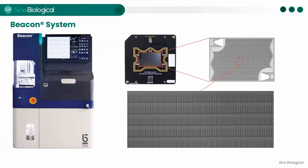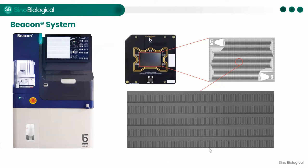The chip is the core component of the Beacon system. Operations such as cell culture, cell screening, and cell export are performed on the chips. Each Beacon system can have four chips running simultaneously. Each chip consists of horizontal channels and vertical nanopans connected by channels. Depending on the number of nanopans, chips can be divided into various specifications such as 11K, 14K, or 20K. For example, the 14K chip can have 10 channels and more than 14,000 nanopans, with a volume of less than one nanoliter each.